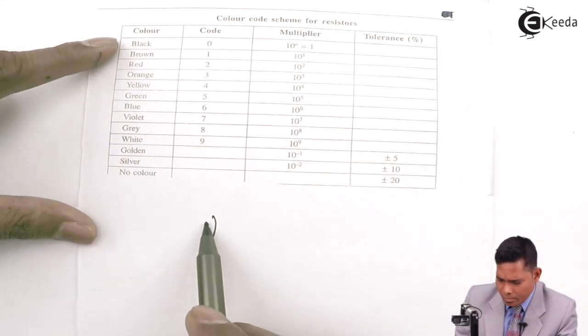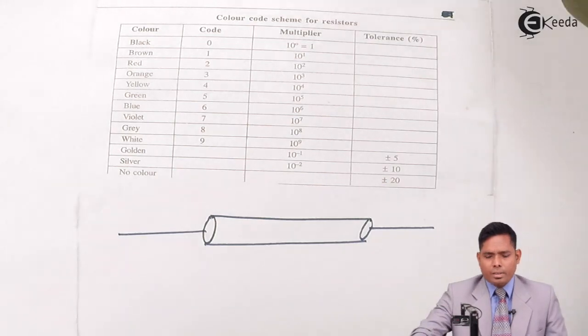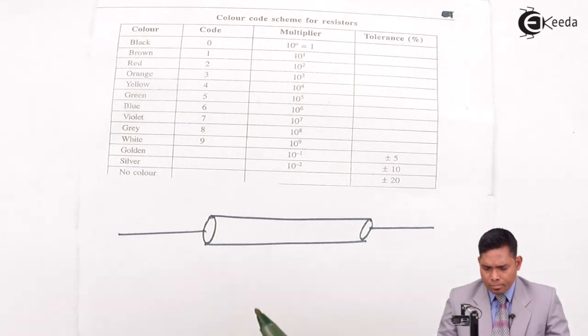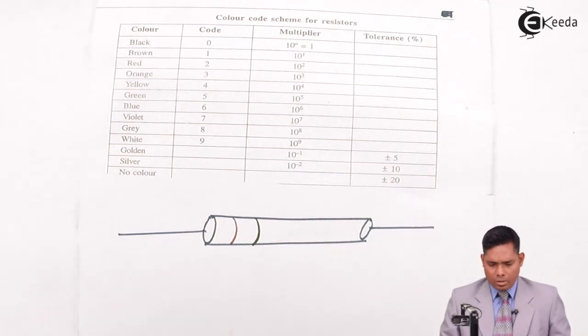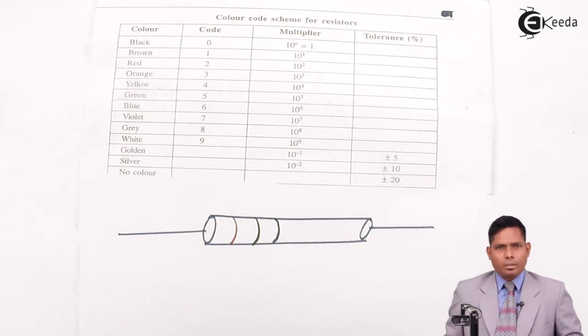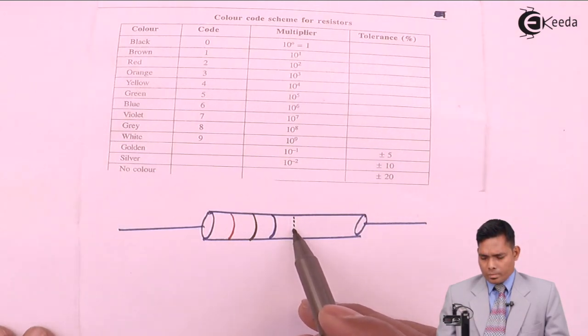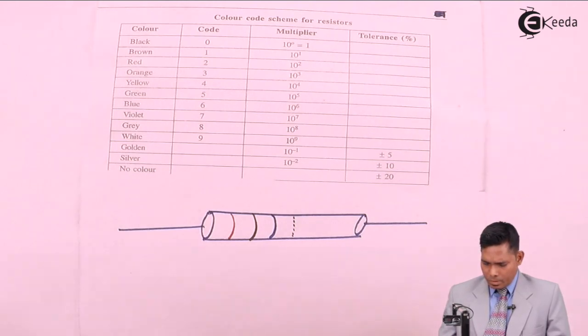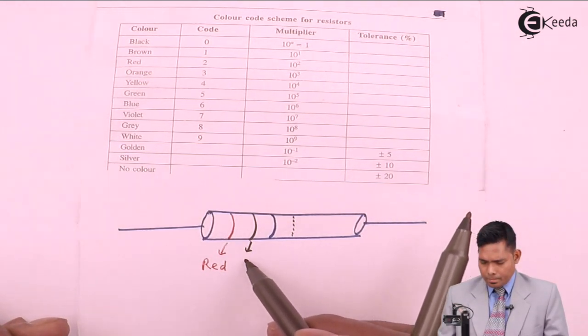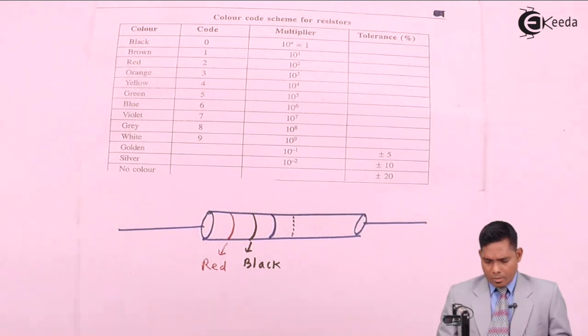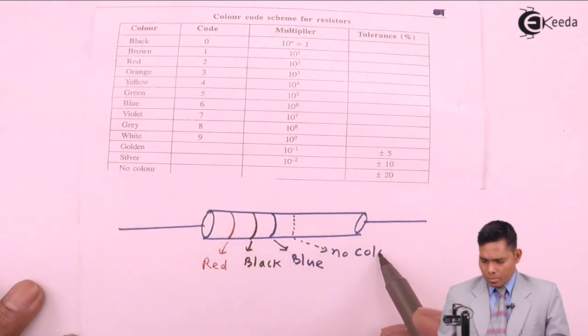Suppose I have a resistor and I give different colors. Suppose the first color is red, second color is black, third color is blue, and there is no other color. The last one, suppose there is no color here. I will represent with a dot. This is red, this is black, this is blue, and this is no color.